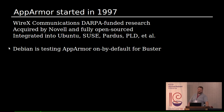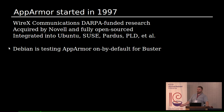AppArmor started in 1997 as a research project, moved to a DARPA-funded research project, was commercialized through Immunix Communications, acquired by Novell and integrated into SUSE. Novell open-sourced all of it — the kernel module was always GPL version 2, but the compiler was proprietary, which killed enthusiasm for the tool. Once Novell open-sourced it, it was integrated into Ubuntu, SUSE, Pardus, PLD, and other distributions. Debian is currently testing AppArmor on by default for buster and it's going pretty well.